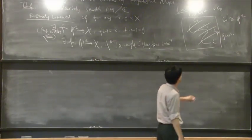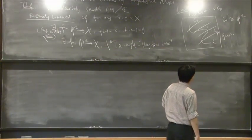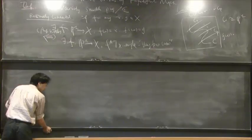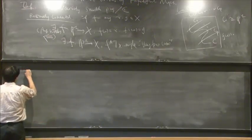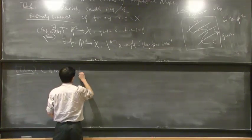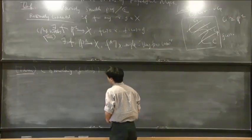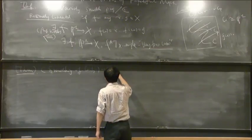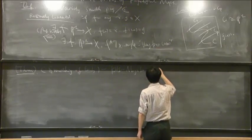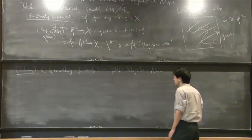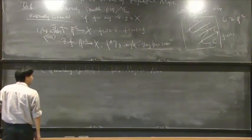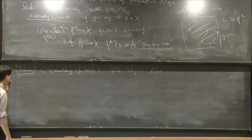If we put the genus of C to be 0, we can also say it is a comb, but it is a bit useless, so we just don't use it. We then state the main technical theorem called the smoothing of combs. This theorem is proved by Professor Kollár, Professor Miyaoka, and Professor Mori. This is a fundamental theorem in higher-dimensional birational geometry.